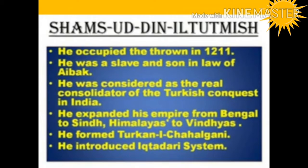Shamsuddin Iltutmish occupied the throne in 1211, after the death of Qutbuddin Aibak. He was the son-in-law of Aibak and also served as his military commander. Iltutmish firmly established control over the territories by suppressing rebellions and was considered the real consolidator of the Turkish conquest in India. He extended his empire from Bengal to Sindh and the Himalayas to the Vindhyas.